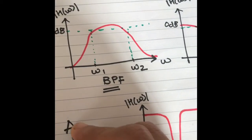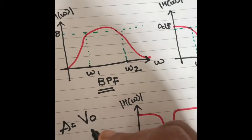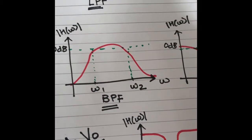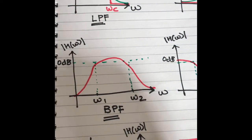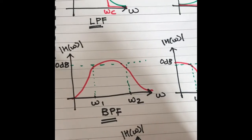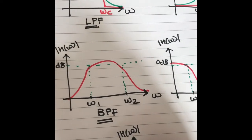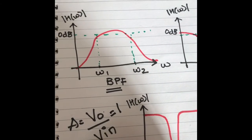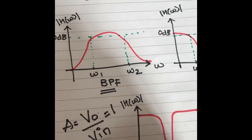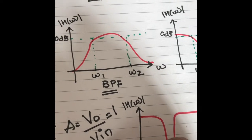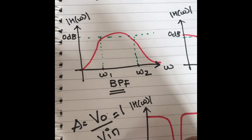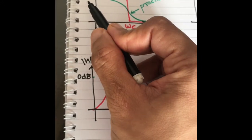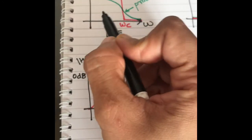If you have studied amplifiers, gain is given by output voltage upon input voltage. If I convert gain into dB, it is 20 log of A. So 20 log of 1 equals 0. That means a gain of 0 dB means the output is the same as the input.